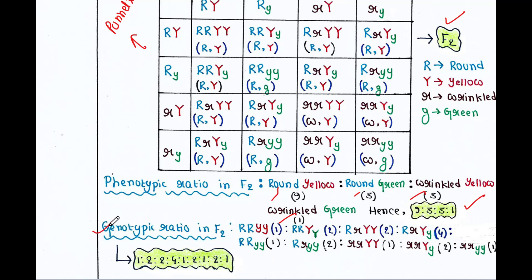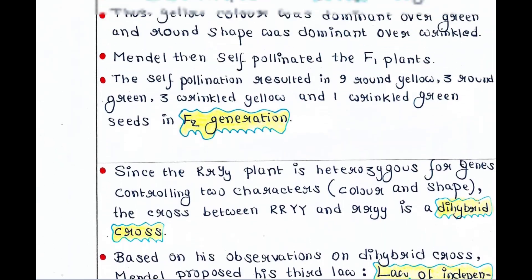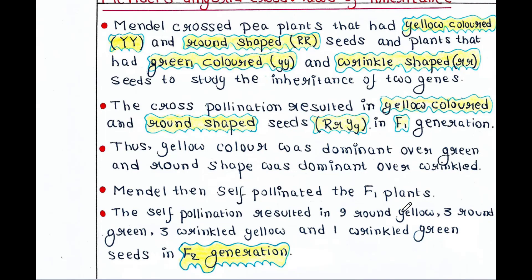If we want to see the genotypic ratio in F2, it was 1:2:2:2:4:1:2:1. We get this from the Punnett square: 1 RR YY, 2 RR Yy, 2 Rr YY, 4 Rr Yy, 1 RR yy, 2 Rr yy, 1 rr YY, 2 rr Yy, 1 rr yy. From this we can make the genotypic ratio in the F2 generation.